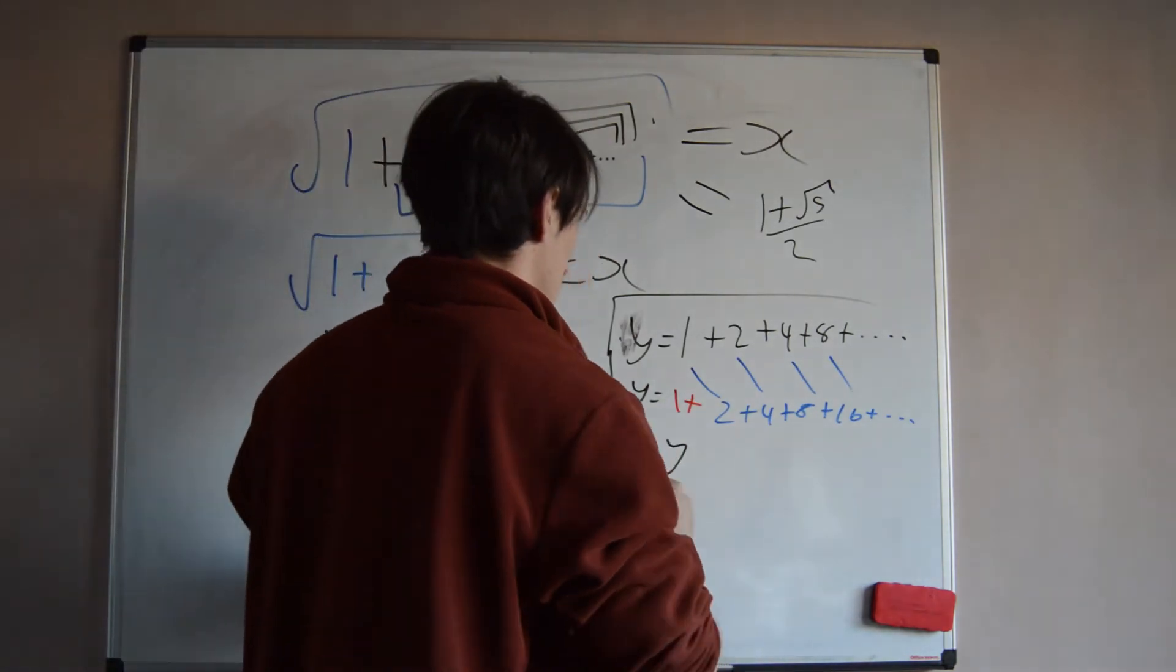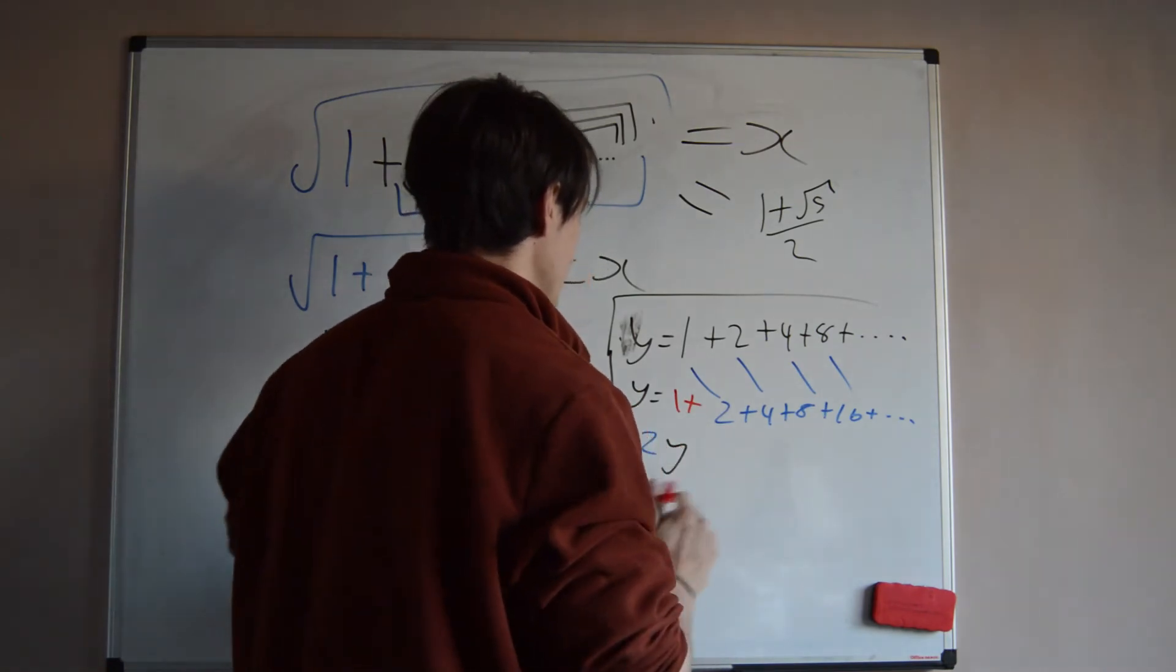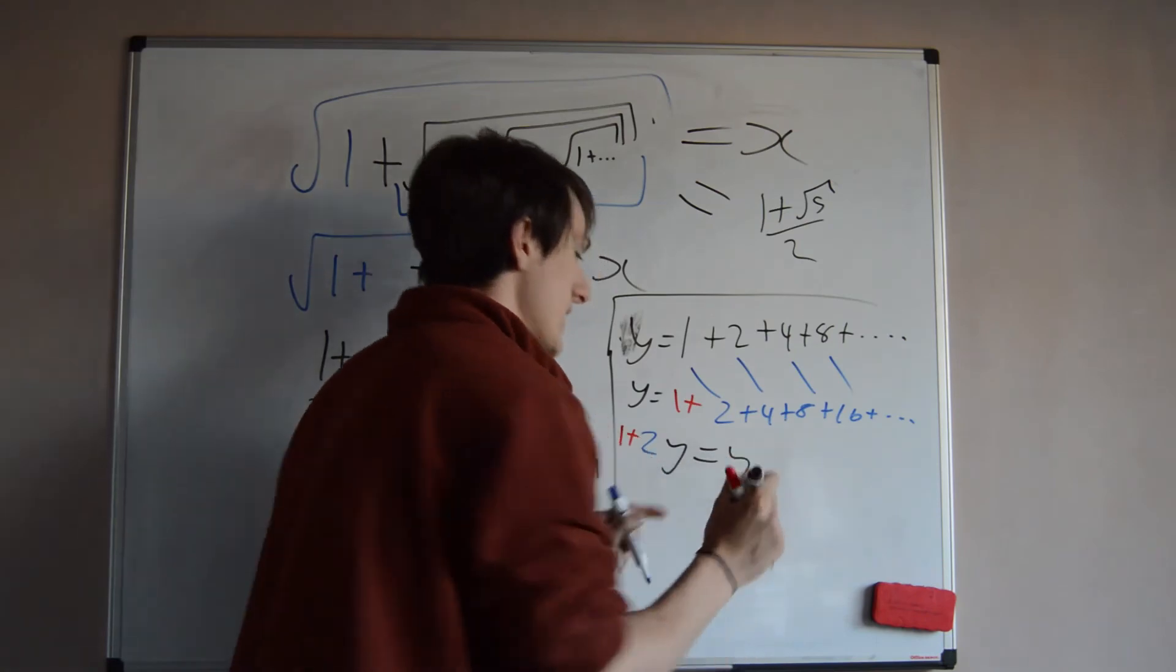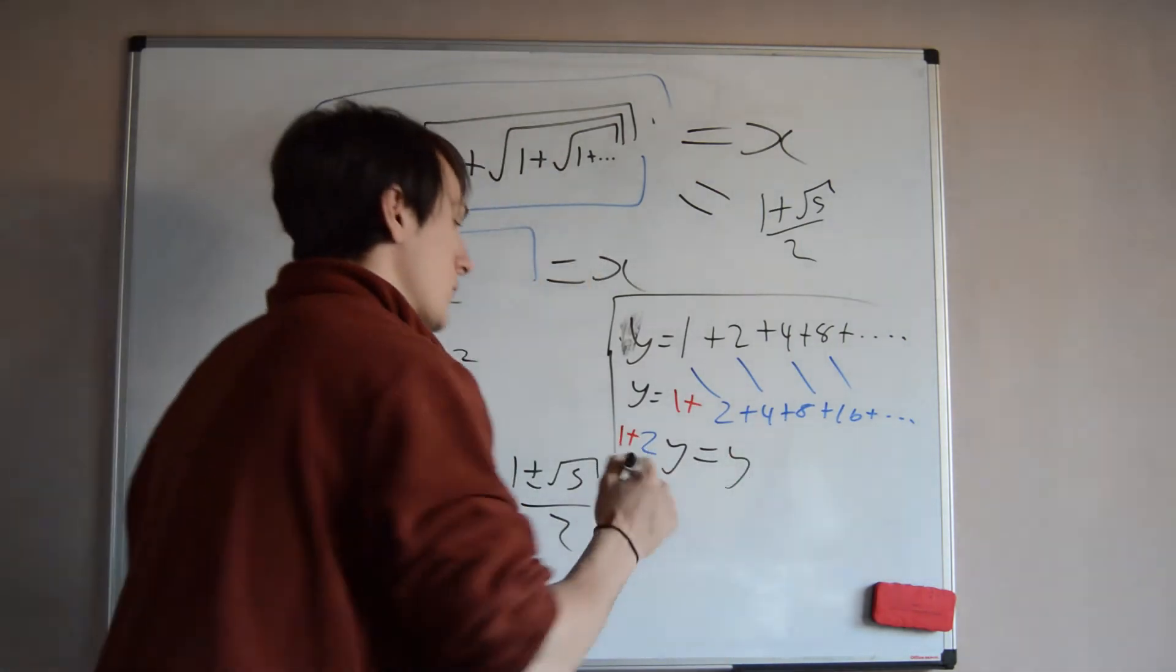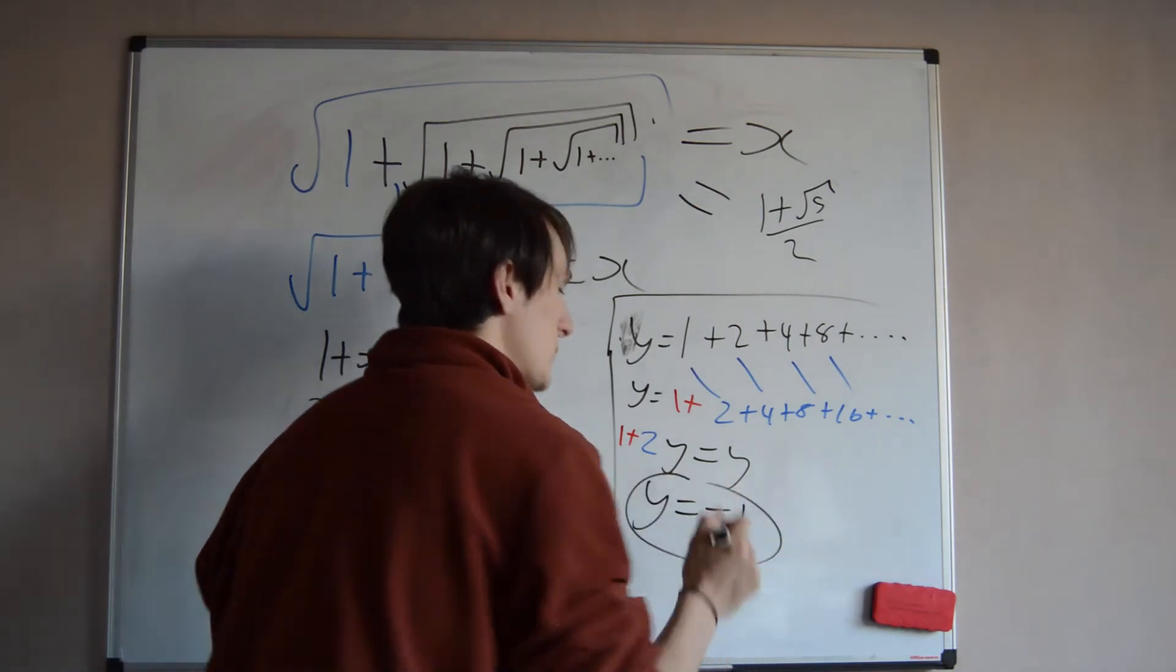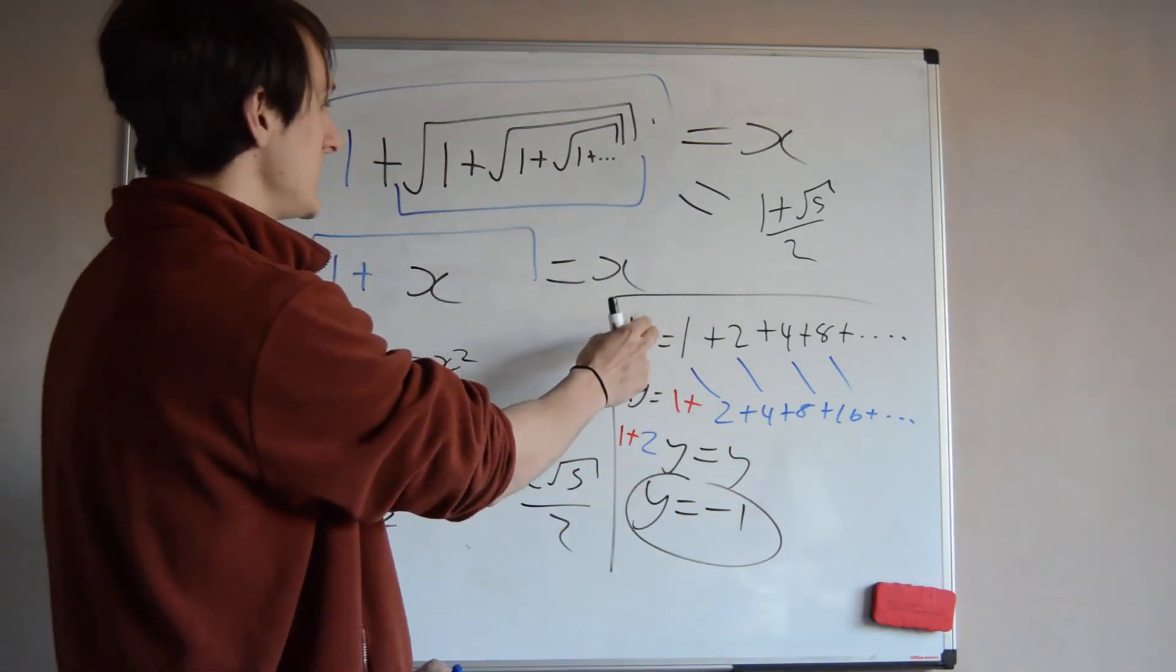So we have y. Okay, and then we doubled it. And then we added 1 at the start. And we said that this was equal to y itself. So that's an equation we can work with. If we minus y from both sides, we get y equals minus 1. This is equal to minus 1.